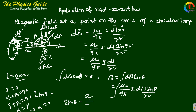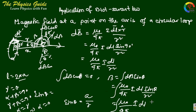Therefore, sin theta equals A divided by R — that is, the radius A over the hypotenuse R. We substitute this into the integral: mu naught by 4 pi times I dL times A by R, over R squared, giving A by R cubed.